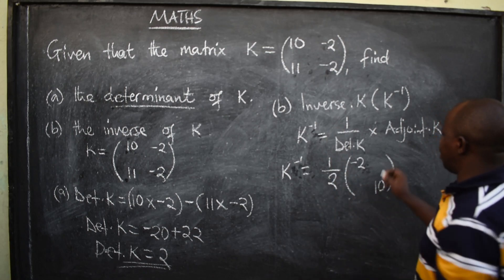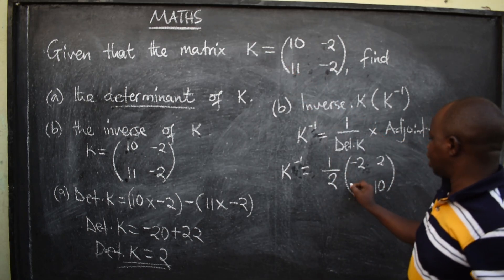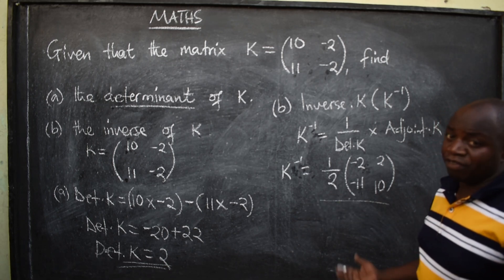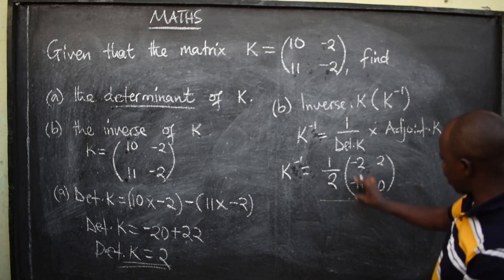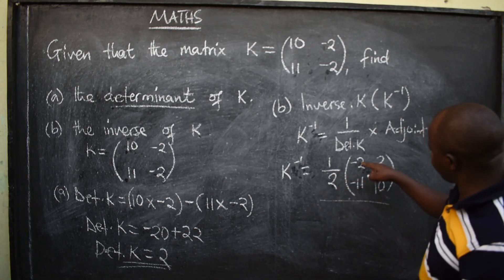So, this one with the negative will be positive. This one, 11 is positive here, it will be negative 11. Just end here. But if you want to go further, you can multiply 1 over 2 by every element inside.